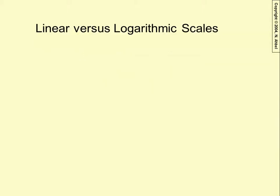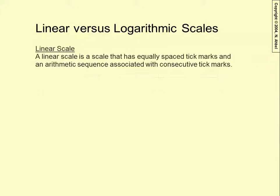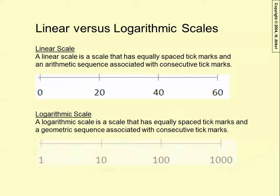Logarithmic scales. People are very used to seeing linear scales, but what's a logarithmic scale and when should you use it? A linear scale is a scale that has equally spaced tick marks and an arithmetic sequence associated with consecutive tick marks. A logarithmic scale, on the other hand, is a scale that has equally spaced tick marks and a geometric sequence associated with consecutive tick marks.